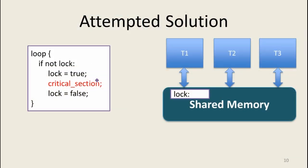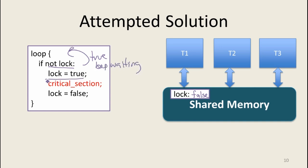Let's look at another attempted solution — the most natural, obvious solution people would start thinking about. We're going to have some part of shared memory as a lock, with a value true or false, starting false. Our code is going to check the lock. If the lock is true, it means some other thread has it, and we won't enter the critical section. If it's false, we're going to set it to true to tell other threads they can't enter, then this thread enters its critical section. When it's done, it sets the lock back to false.